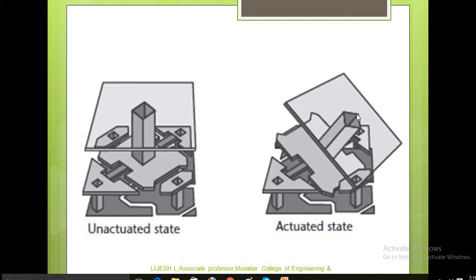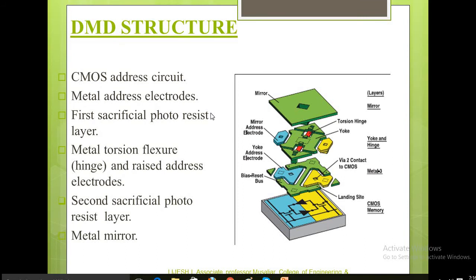Now we will see the structure of a DMD. Here we can see CMOS memory, this is the metal layer, the hinge layer support, and finally the mirrors. The mirror is made out of aluminum, around 16 micrometers across. Each one is connected on a yoke, and here you can see the mirrors and the electrodes.